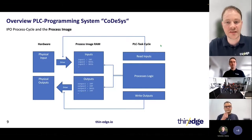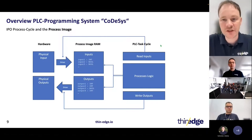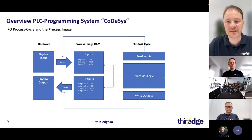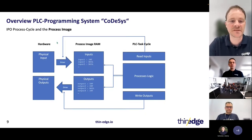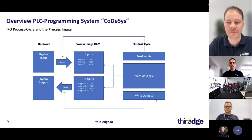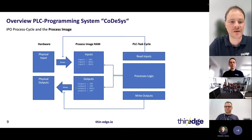Let's have a short look at the structure of a typical PLC application. The PLC application is executed in a cyclic task. On the left side of the figure you can see the physical hardware inputs and outputs, and on the right side the PLC application flow. In each PLC cycle, first a driver reads all physical inputs and stores them into RAM in the so-called process image. Next, the PLC logic is triggered and works on those inputs and the output area. After that, the outputs are written — drivers map all outputs from the process image in RAM to the physical outputs.